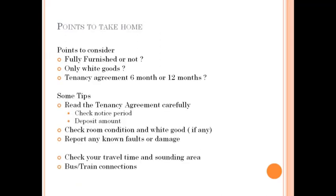Accommodation comes in different styles. Fully furnished means you get everything: your bed, sofa, possibly a TV, fridge, freezer, washing machine, and all kitchen cutlery — you don't need to buy anything. Partly furnished might just be a bed with no sofa, maybe a dining table, or it could come with only white goods — meaning just a washing machine and fridge or freezer.